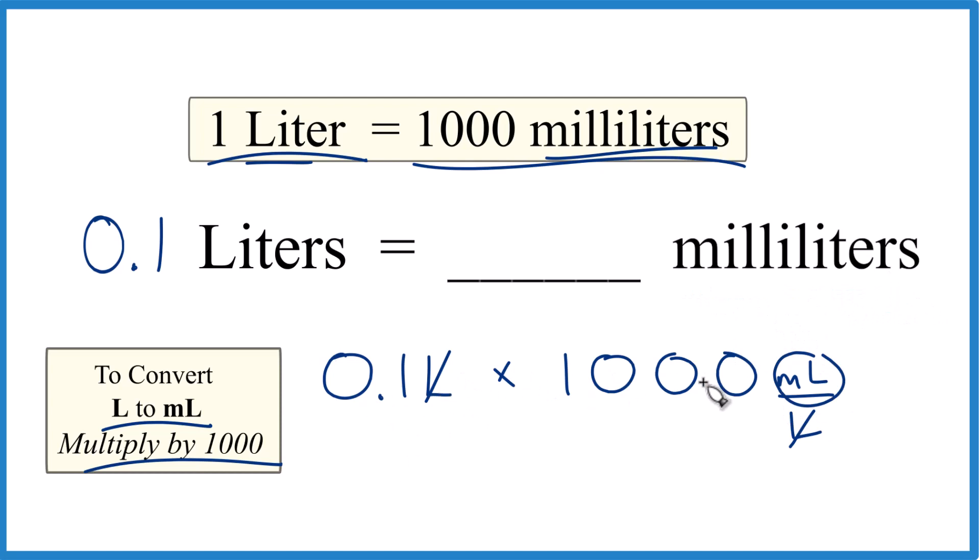So 0.1 times 1,000, that equals 100, and the units, that's going to be the milliliters there. So in answer to our question, 0.1 liters, that equals 100 milliliters.